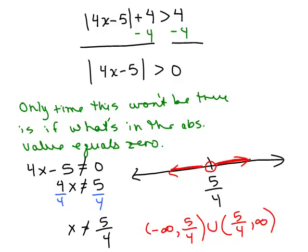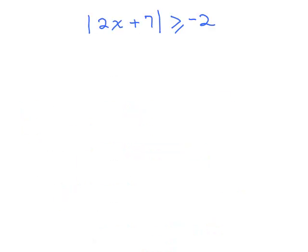These are tricky problems — you might want to watch this video more than once and use your noodle to make sense of it. Here's the next one: absolute value of 2X plus 7 is greater than or equal to negative 2. Just think about that. Absolute value is always greater than or equal to 0, so it's certainly always going to be greater than or equal to negative 2. No matter what you put in for X, once you take the absolute value it will automatically be bigger than negative 2. So the solution is all real numbers.